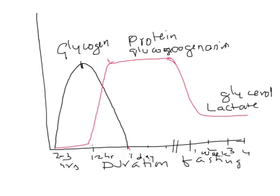For gluconeogenesis, every two lactates converted to one glucose requires six ATPs. Similarly, two alanine molecules converted to one glucose require six ATPs. For glycerol, a different number of ATPs is required — approximately two ATPs.